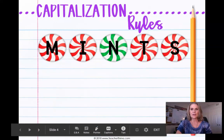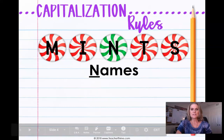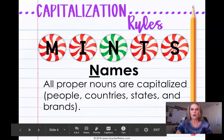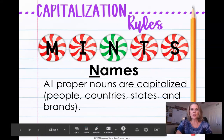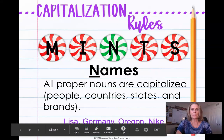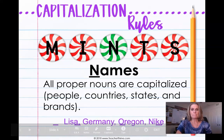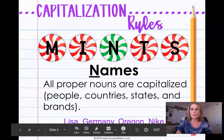Next is the letter N, which stands for names. All proper nouns are capitalized — names of people, names of countries, names of states, and names of brands all need to be capitalized. Write that down in your notes. For example: Lisa is a name of a person, capitalize the L. Germany is a name of a country, capitalize the G. Oregon is a name of a state, capitalize the O. Nike is a name of a brand, capitalize the N.